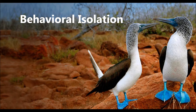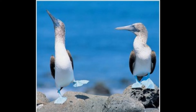Behavioral isolation results from differences in courtship or mating behavior that keeps members of different species from mating. Even when they inhabit the same geographic area, these barriers often consist of special signals or elaborate behaviors that are used by members of the species to attract, recognize, and accept mates. Examples include courtship displays such as with the blue-footed boobies, pheromones, chemical signals, and the songs of birds.